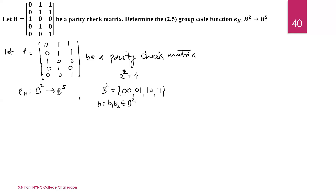This encoding function is defined as E_H(b) where b = (b1, b2), and the output is a 5-digit codeword. The first two digits are b1 and b2 as they are, and then we append x1, x2, x3.